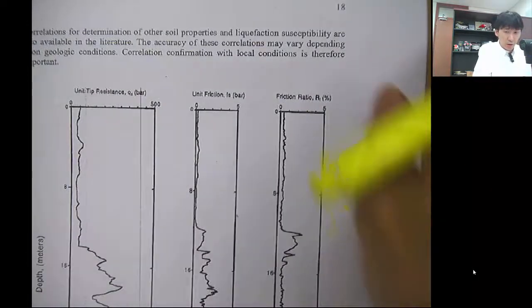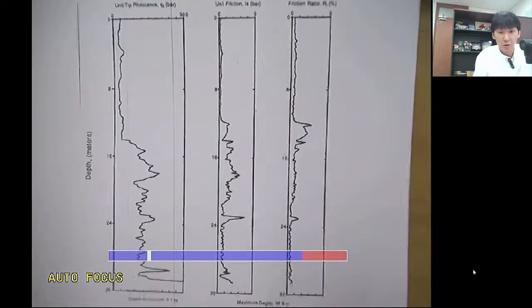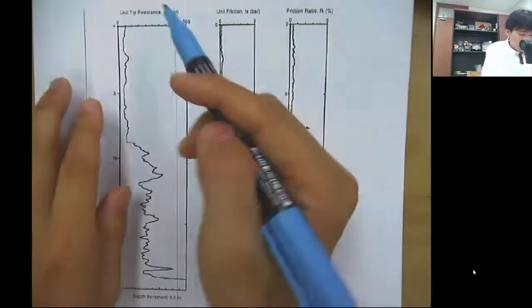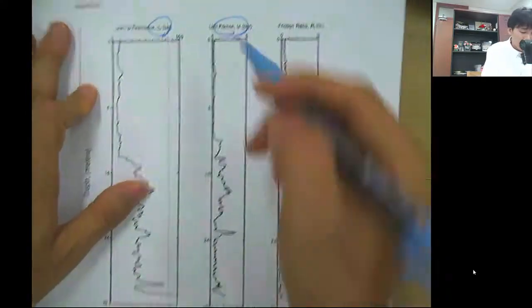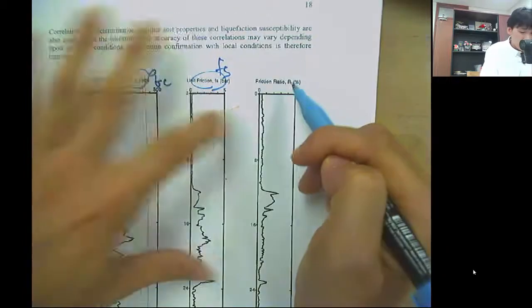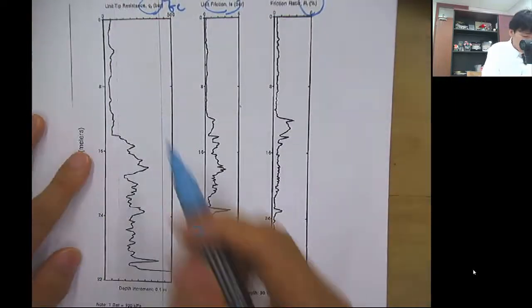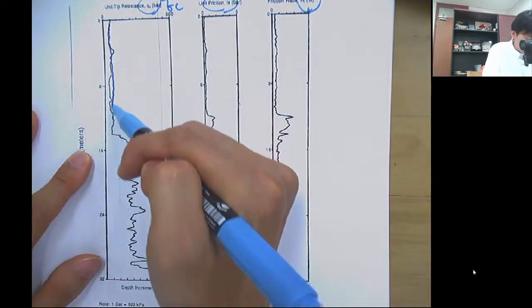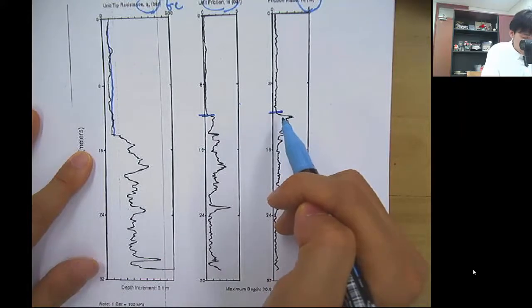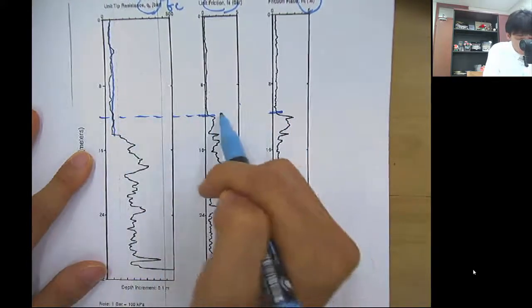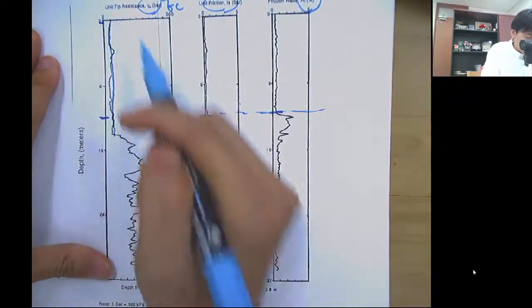For example, this graph shows the typical result that you get from the field. Here, you have tip resistance QC, and side friction Fs, and this is the friction ratio Rf. See that QC is pretty consistent for the first layer, and then suddenly you have a jump at the friction ratio and the side friction. Probably you have a homogeneous layer up to this point from the ground surface.